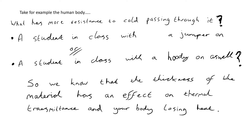To break it down, take the human body as an example. What has more resistance to cold passing through it — a student sitting in class with a jumper on, or a student with a hoodie on as well over the jumper? We know that the thickness of the material has an effect on thermal transmittance and heat loss. If you've got the hoodie on, you've got twice or three times the thickness resisting heat passing from your body to the outside.